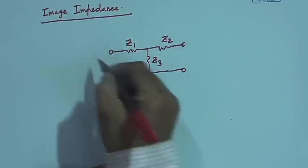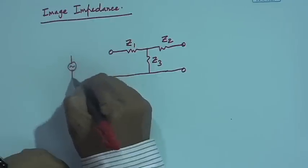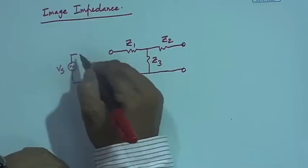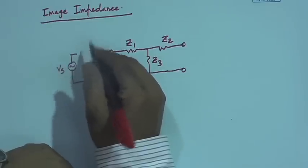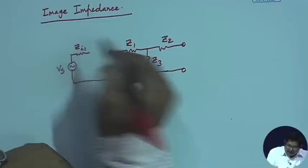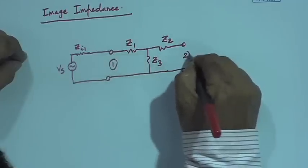I want that when I excite port 1 with voltage V_s, I have some internal impedance — let us call that internal impedance Z_i1. Last time I called it Z_s; this time I am calling it Z_i1 — it is simply a change of nomenclature. This is my port 1 and this is my port 2.